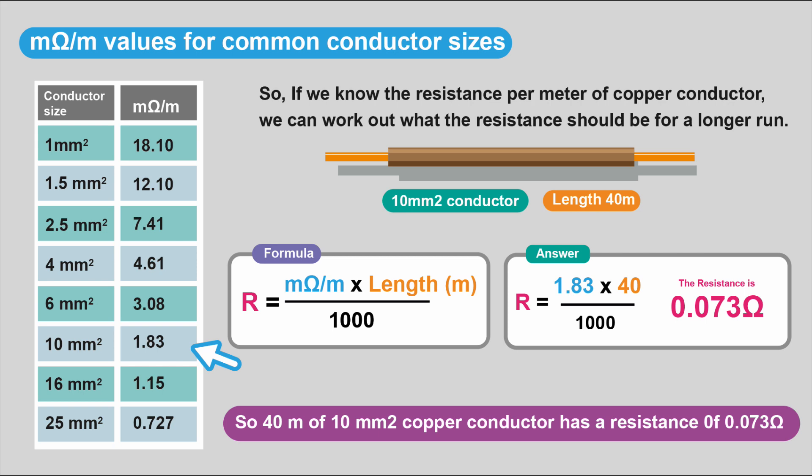And here we have another example. This time it's 10 millimeter squared conductor. Let's have a look. 10 millimeter squared conductor has a value of 1.83 milli-ohms per meter. So we do the same sum.